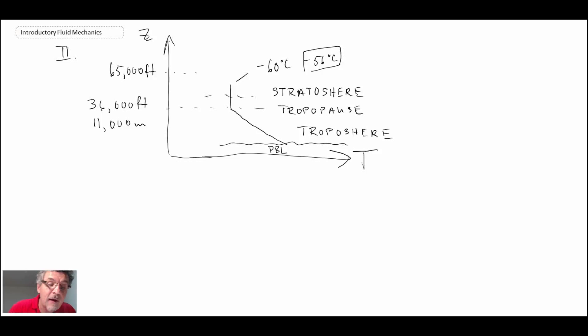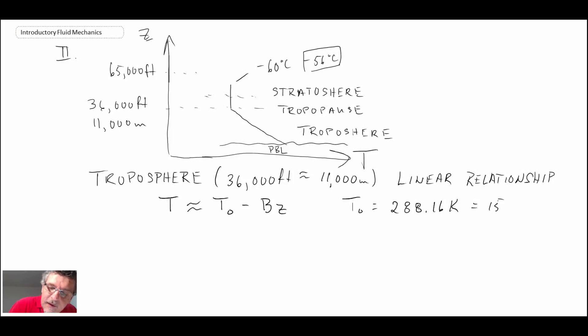Whenever you're flying in an aircraft, the highest you probably get to would be about 45,000 feet. But the important point here is that in the troposphere, up to about 36,000 feet which is 11,000 meters, we have a linear relationship and we can work with that to solve for the pressure as a function of elevation. The temperature in the troposphere is expressed as T₀ minus BZ, where T₀ is again 15 degrees C, 288.16 K.